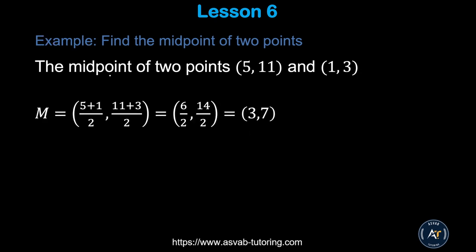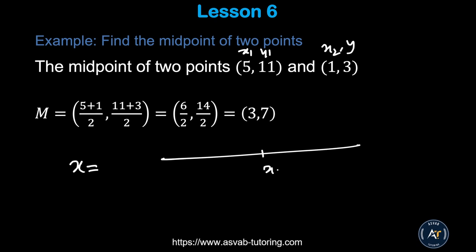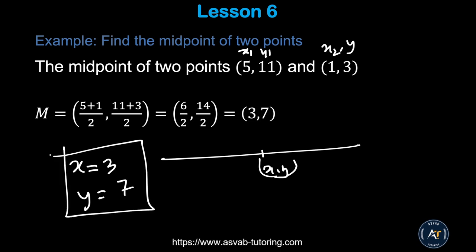Find the midpoint of two given points. Label them x1, y1, x2, y2, then calculate (x1 + x2) / 2 and (y1 + y2) / 2. Simplifying gives x = 3 and y = 7 as the midpoint coordinates. Pause the video and try it yourself — this type of problem always appears on the actual test.